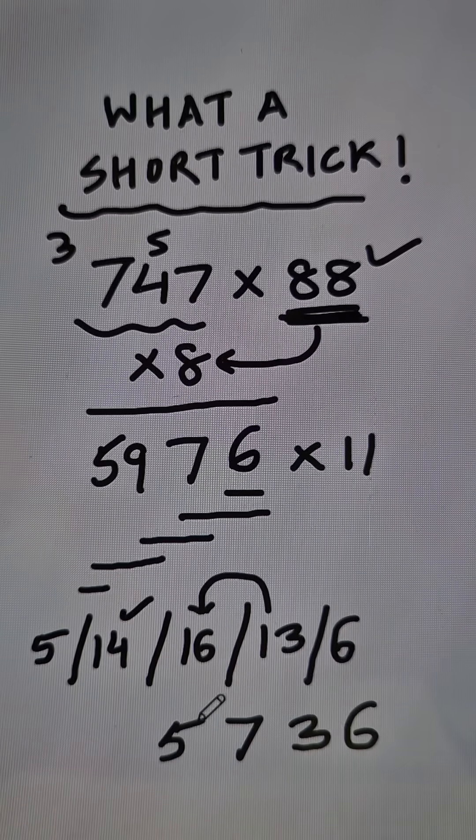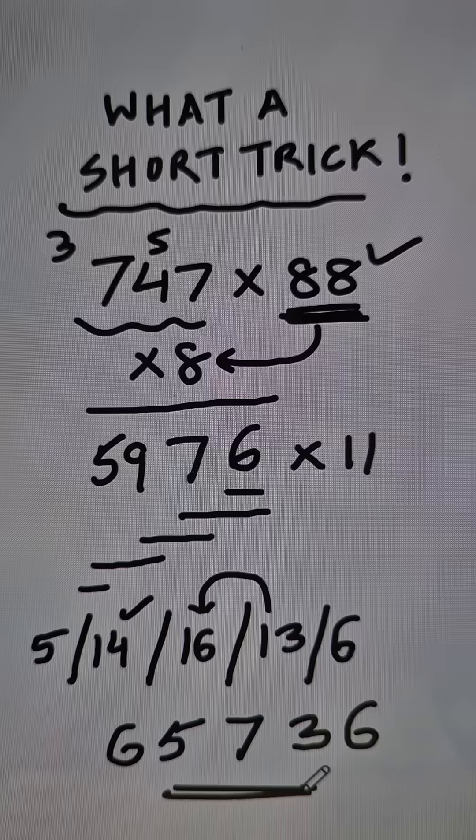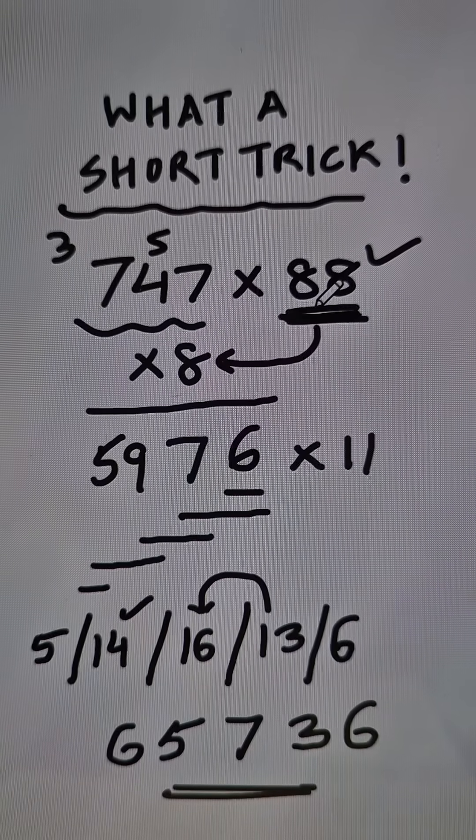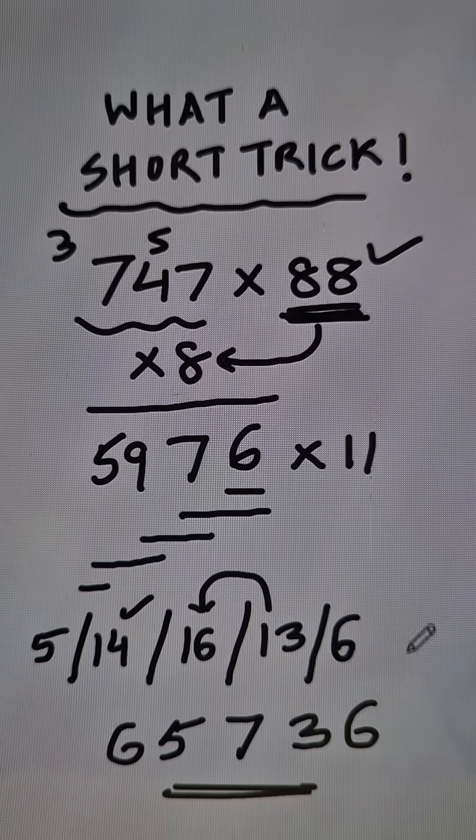So 5 and the 1 carried makes 5 become 6. And now pick up your calculators and check: is 747 times 88 equal to 65,736? You will be surprised by the result.